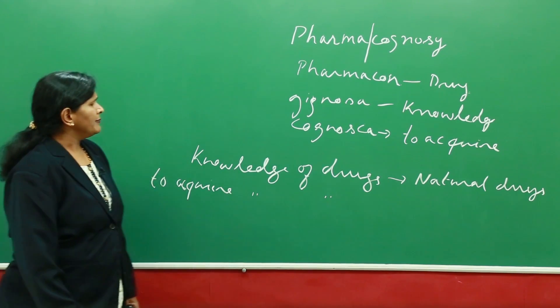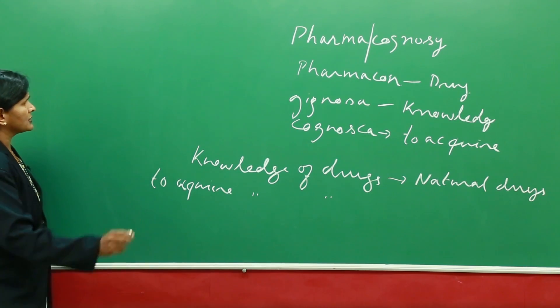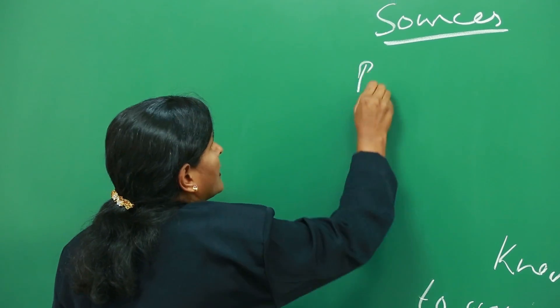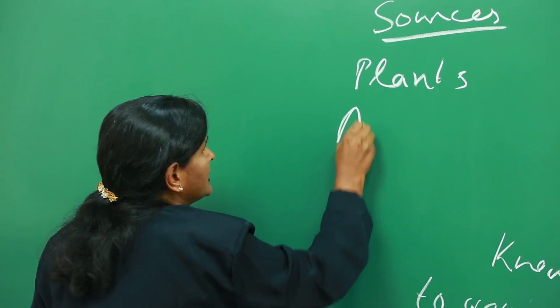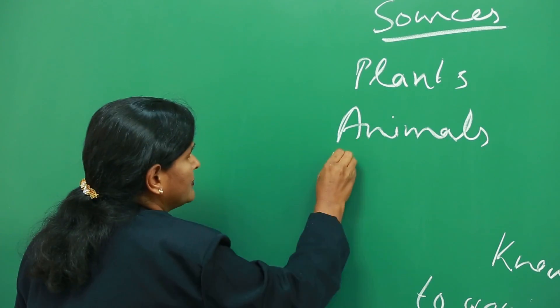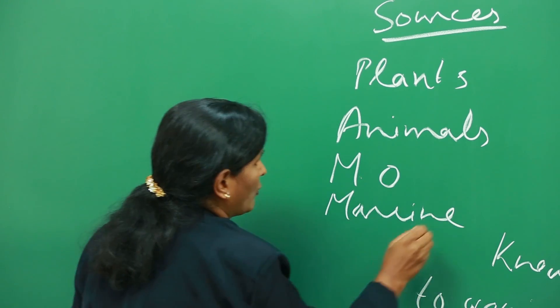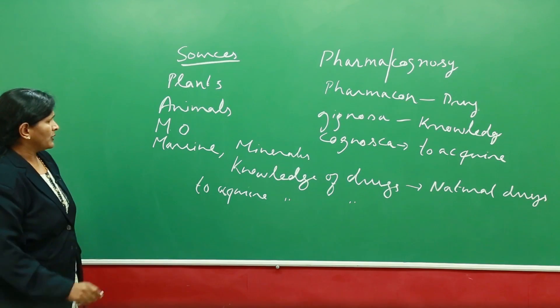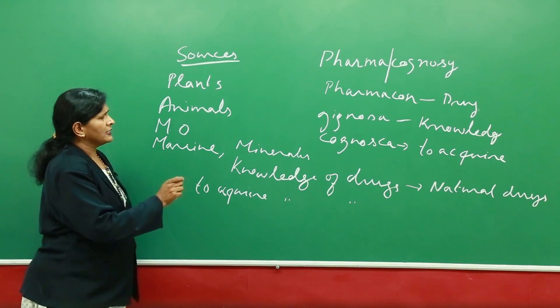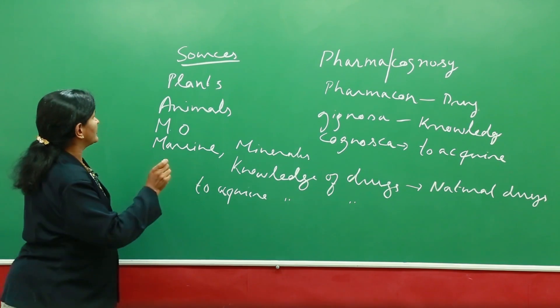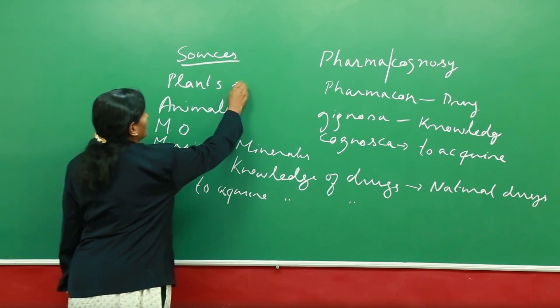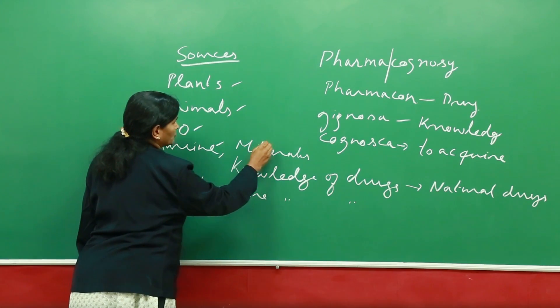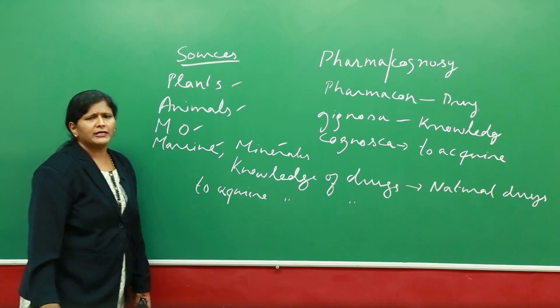These products can be obtained from various sources. The sources of these drugs can be plants, animals, microorganisms, marine sources, and also minerals. So, it is to acquire the knowledge of natural drugs which are obtained from plants, animals, microorganisms, marine sources, and mineral sources.